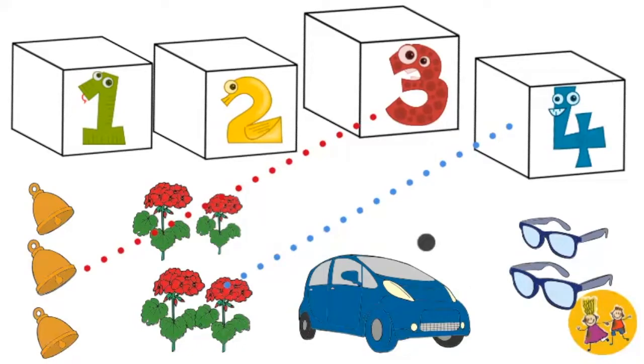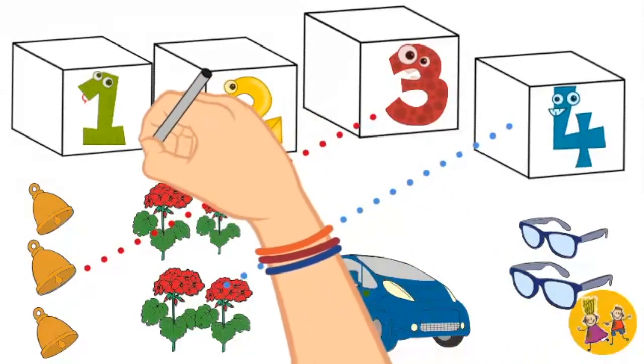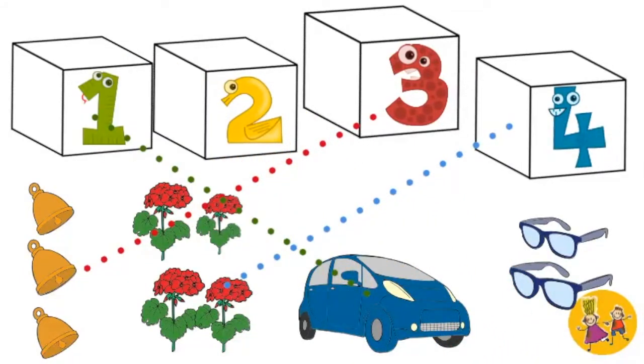Look! We have only one car. So we match it with box number 1. And now let's count sunglasses. 1, 2. We match it with box number 2.